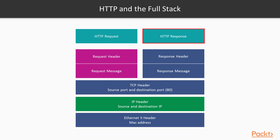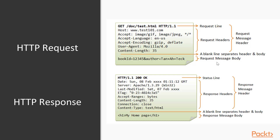Similarly, the HTTP response is comprised of the response header on top of the response message. If you want to take a closer look at the HTTP request and response messages, you have the header on top of the request message body separated by a blank line. Similarly, in the HTTP response message, we have the message header and the message body separated by a blank line.